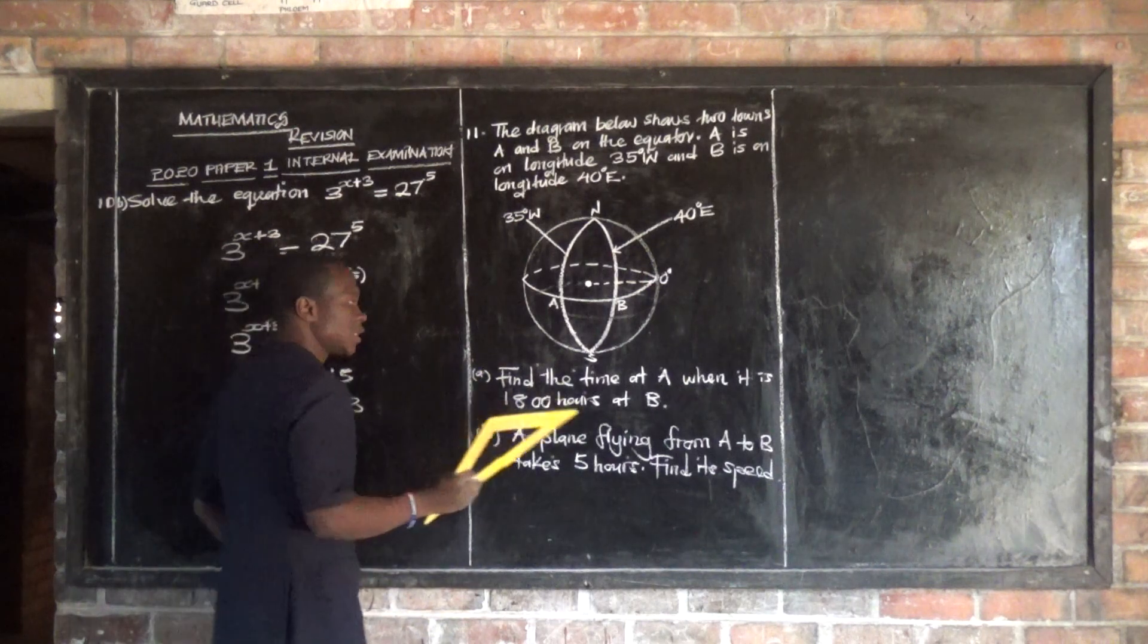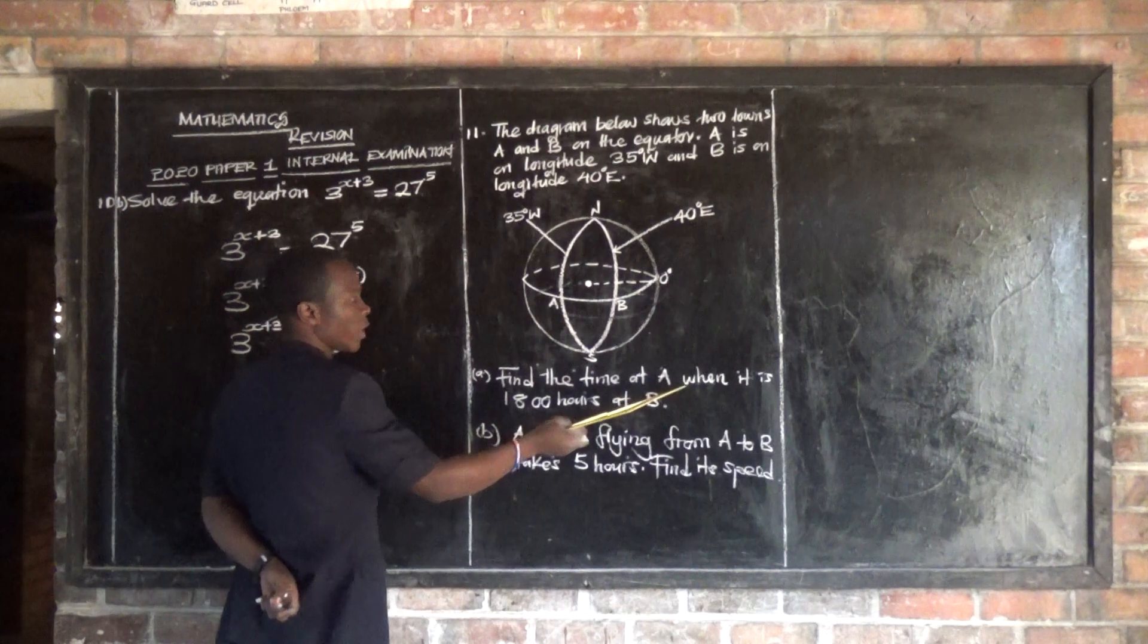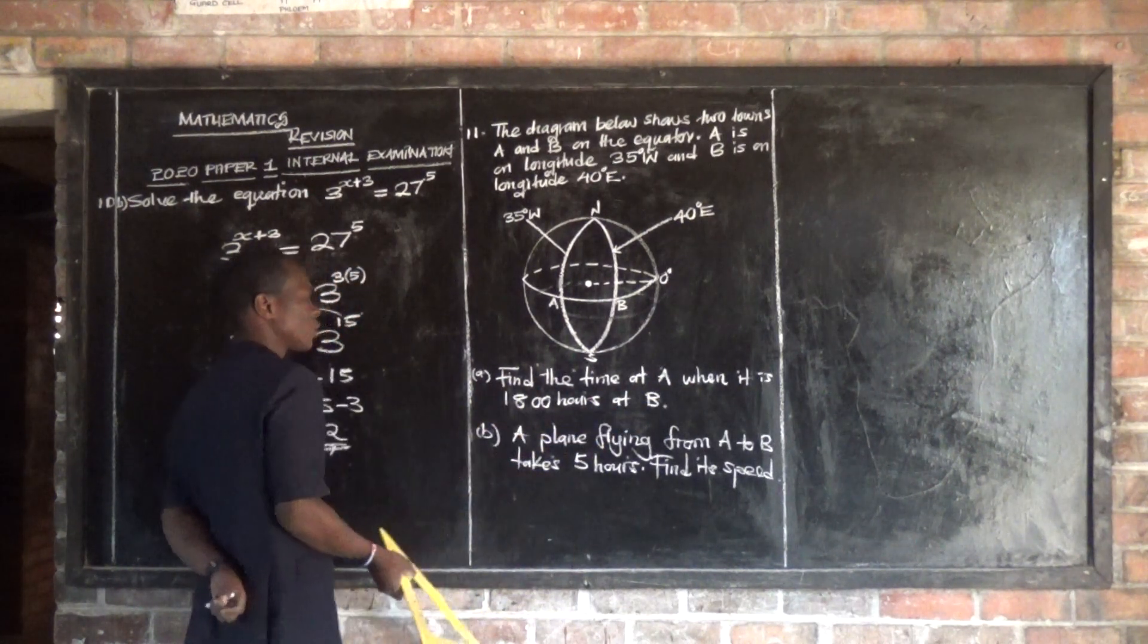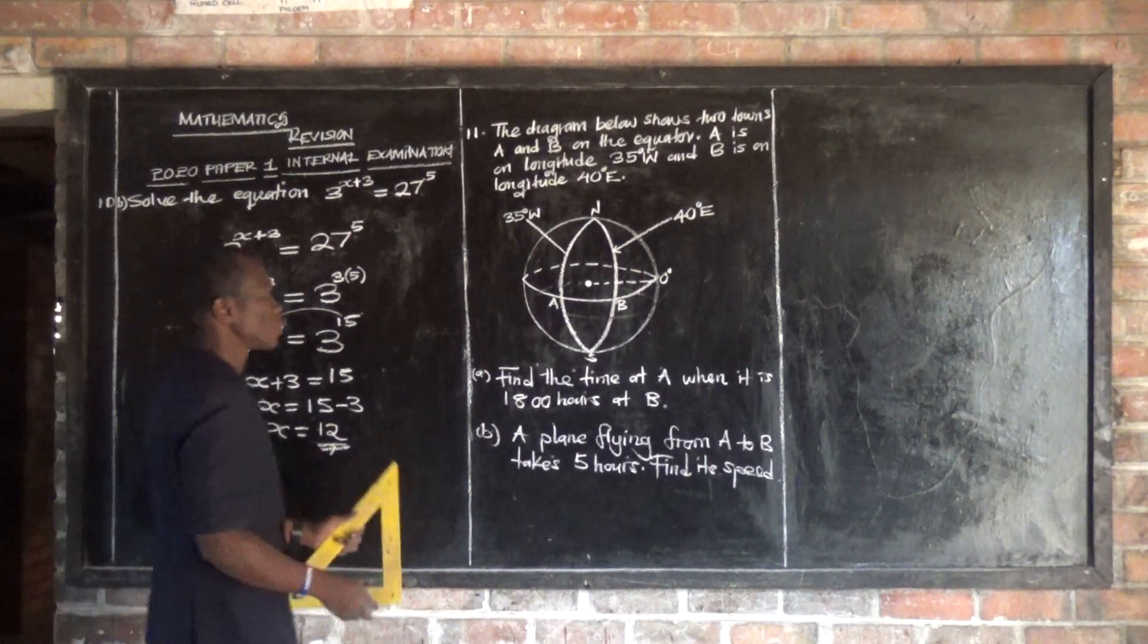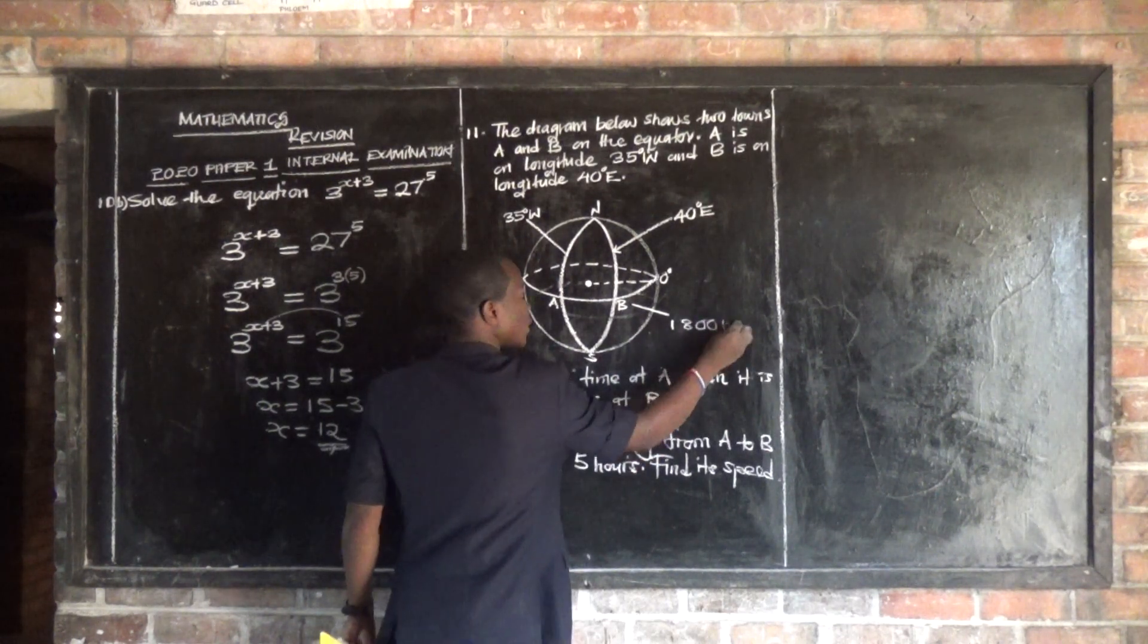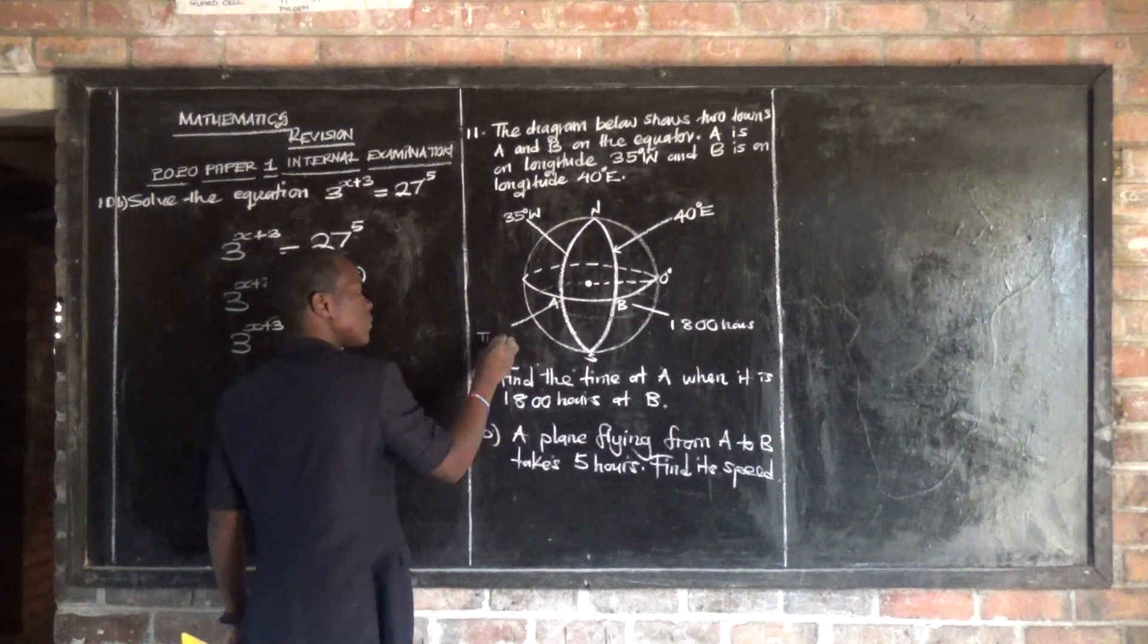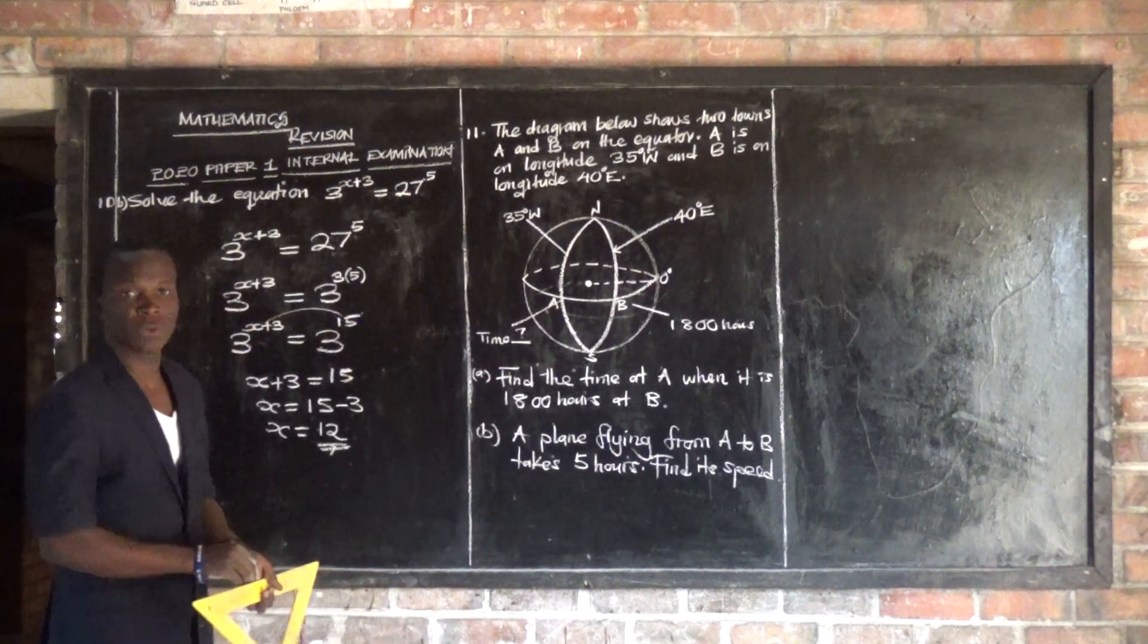Now, they are saying, the first column says find the time at A when it is 18 hours at B. So they say, if it is 18 hours at B, what is the time? What is the time at A? This is question mark.